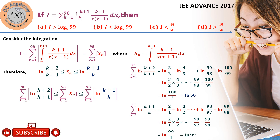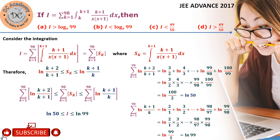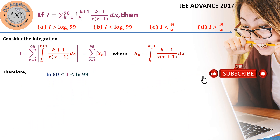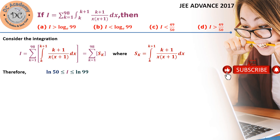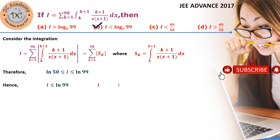For the other sum of log[(k+2)/(k+1)], a similar telescoping gives log(99) after cancellations. Therefore I lies between log(50) and log(99). We can rewrite this as I ≤ 99 and I ≥ 50.